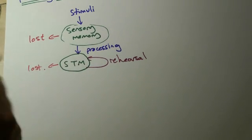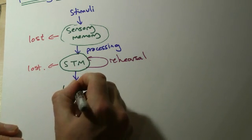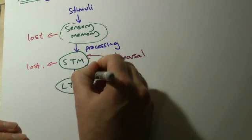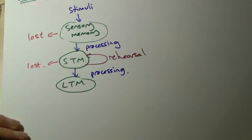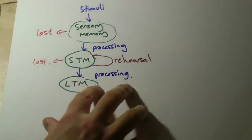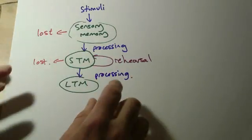Because what we're aiming to do in this model is to get that information to go into our long-term memory. I'm just going to put LTM for that one. Long-term memory. And again, this term processing, it's a bit of an easy term really, because there could be a whole bunch of things going on here that we're not discussing in any kind of detail. So we're just going to say, oh, it's processed in some way.